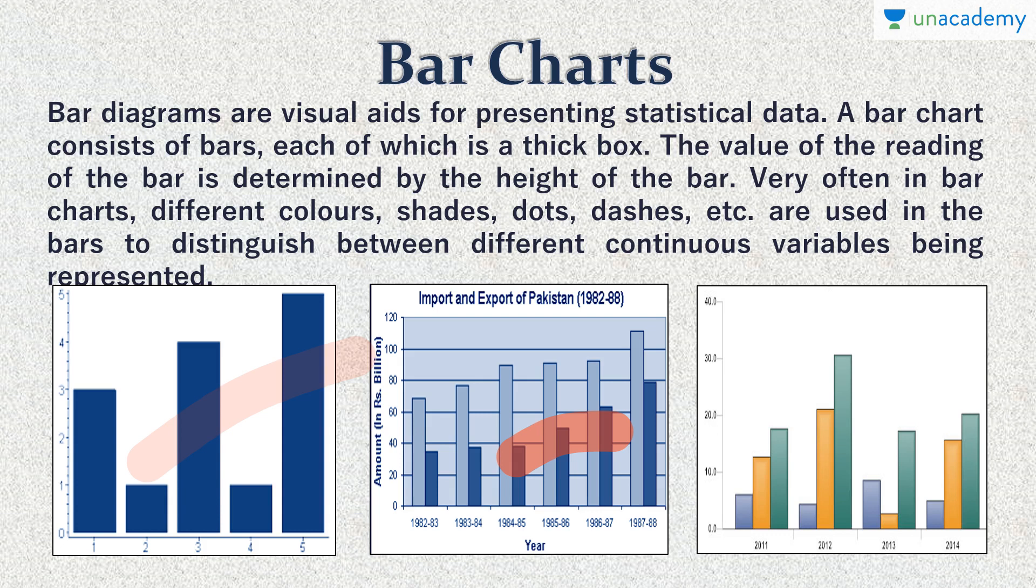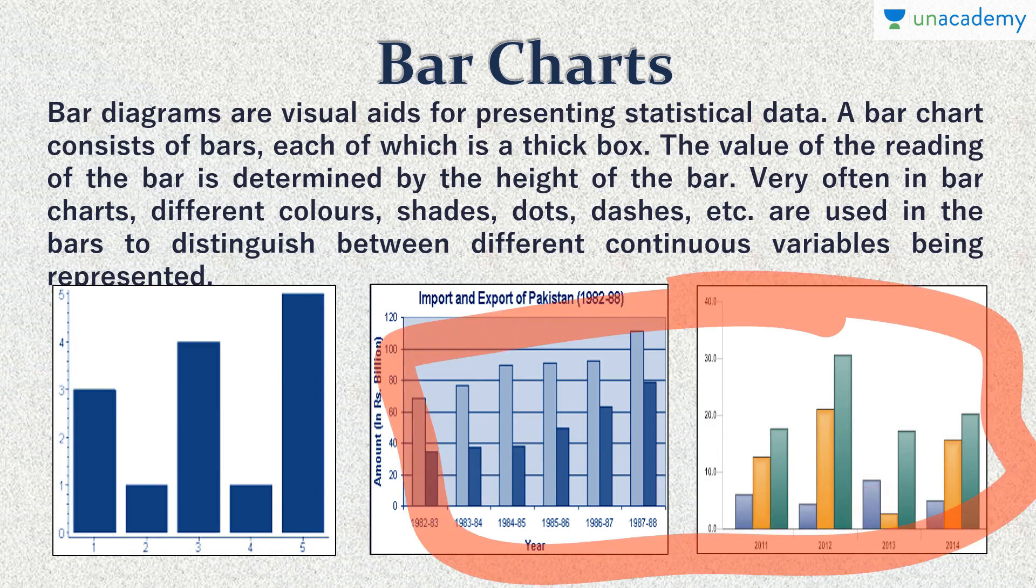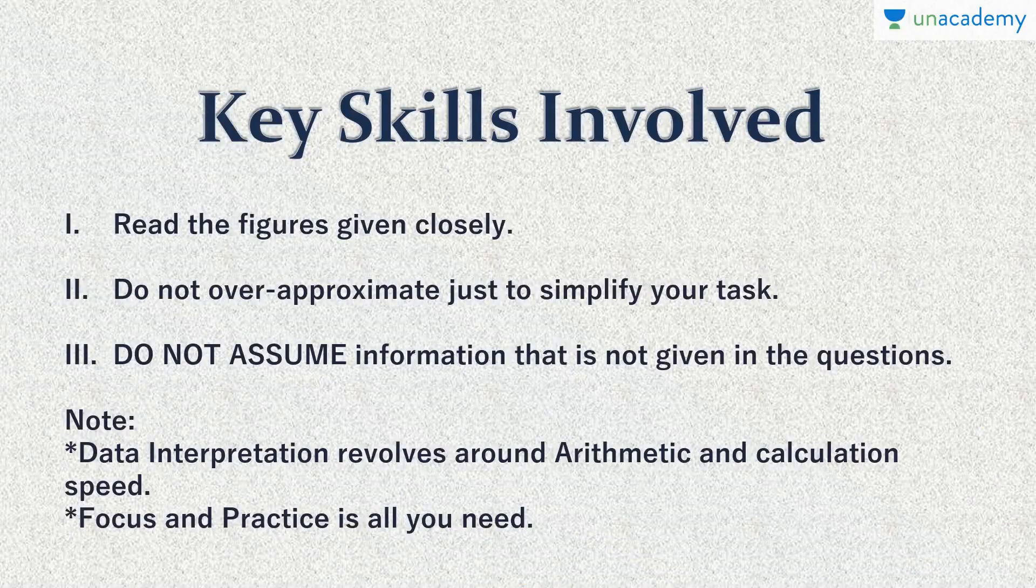Very often they may be represented in different colors, shades, dots, and dashes, and some other fashion just to indicate different continuous variables being represented. As we can see here some of the examples: this is known as a simple bar chart where just single bars are indicated. In this you can see there are two bars indicating two different variables, while in this there are three. These two come in multiple bar charts, so there can be even four or five or as many as required to represent the data.